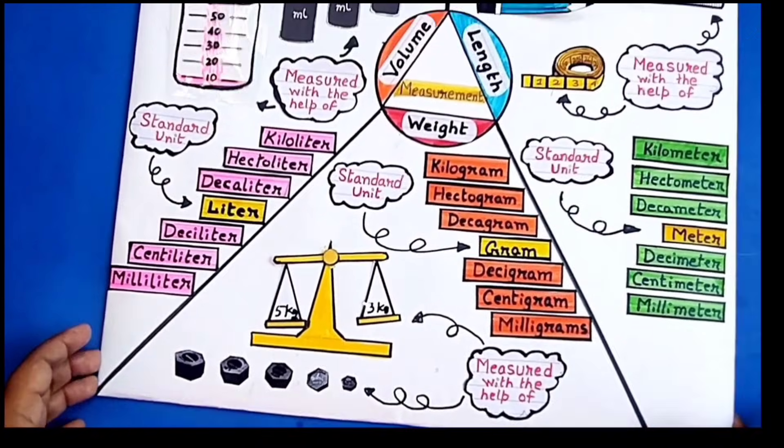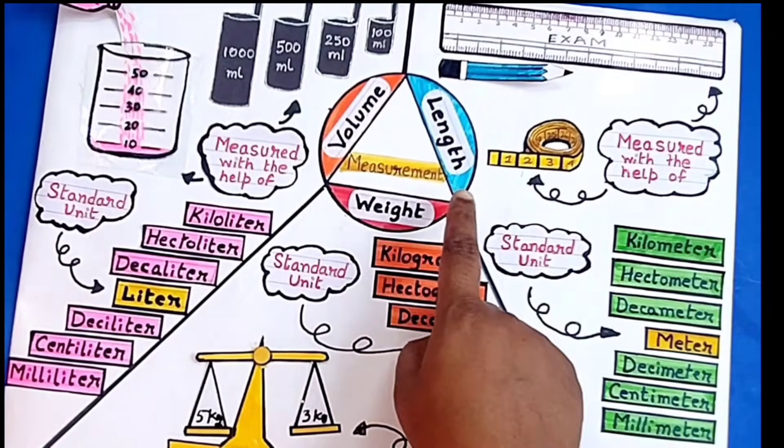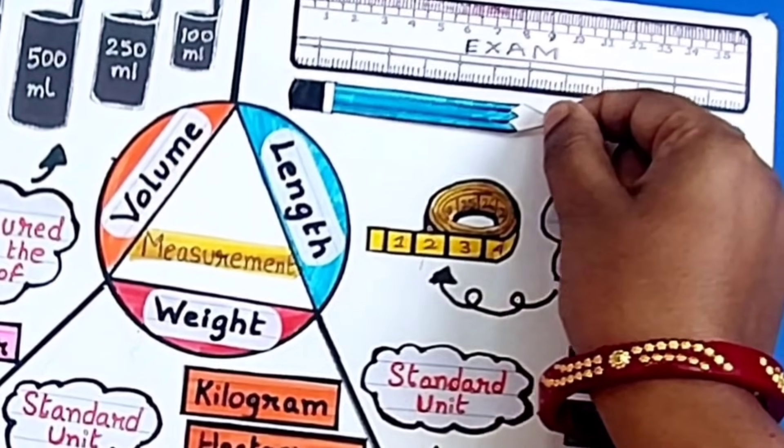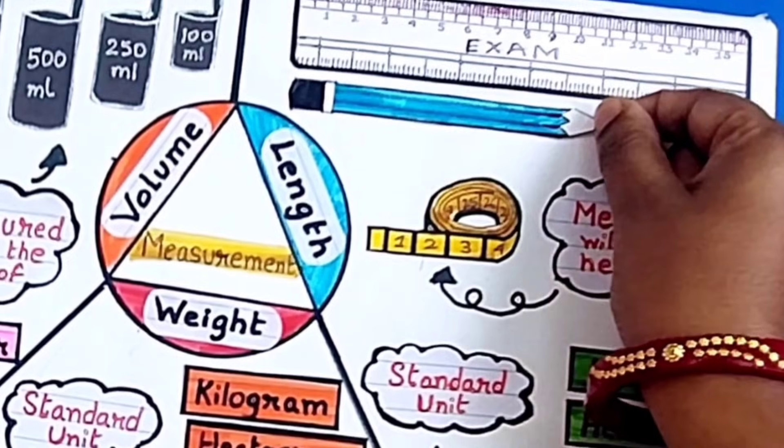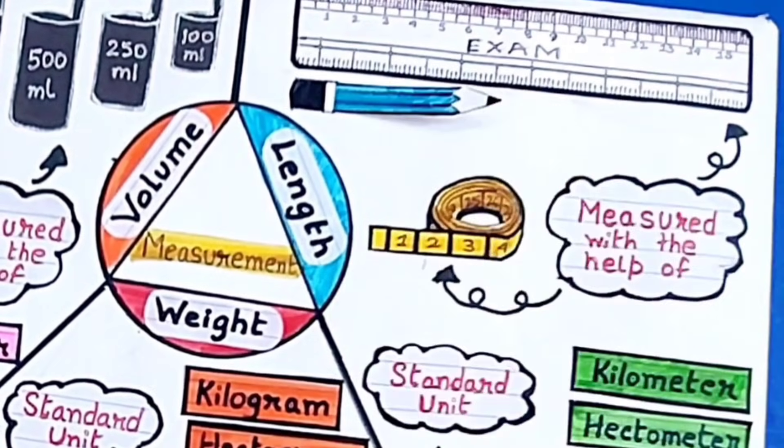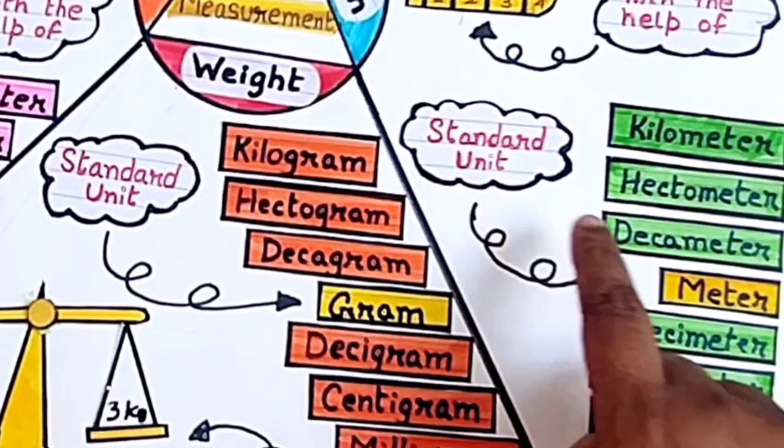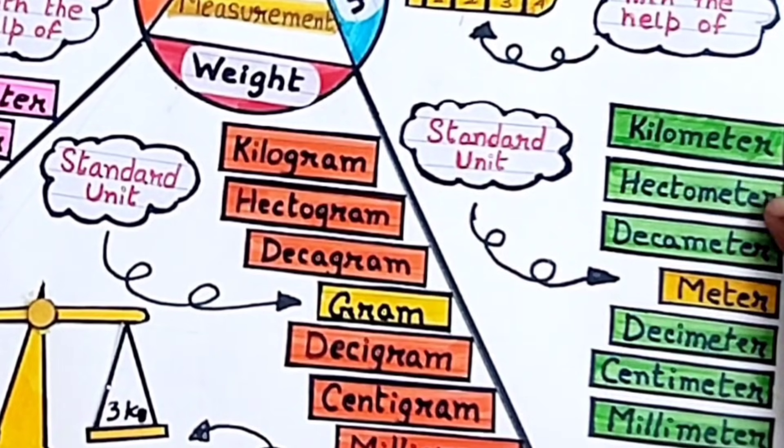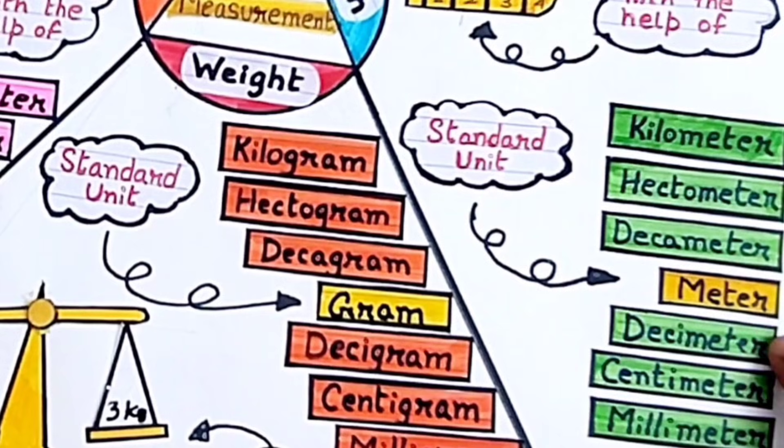Next is length. Length is measured with the help of measuring tape, meter scale, ruler, etc. The standard unit of length is meter, and the other units are kilometer, hectometer, decameter, decimeter, centimeter, millimeter, etc.